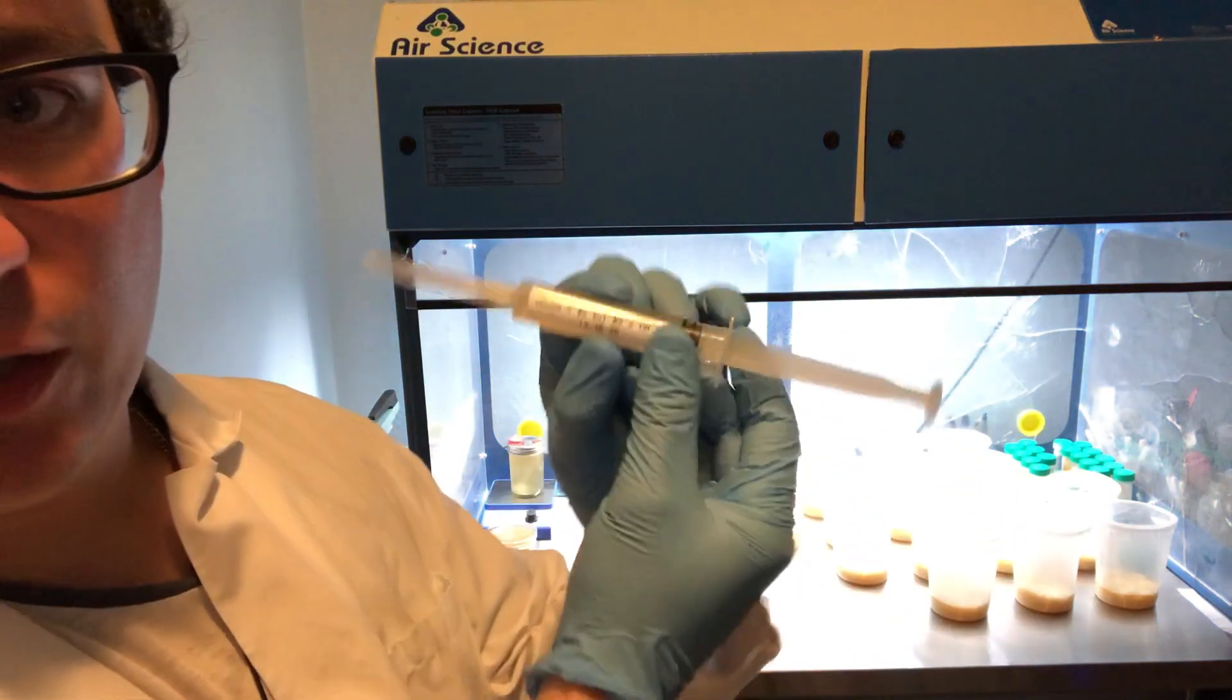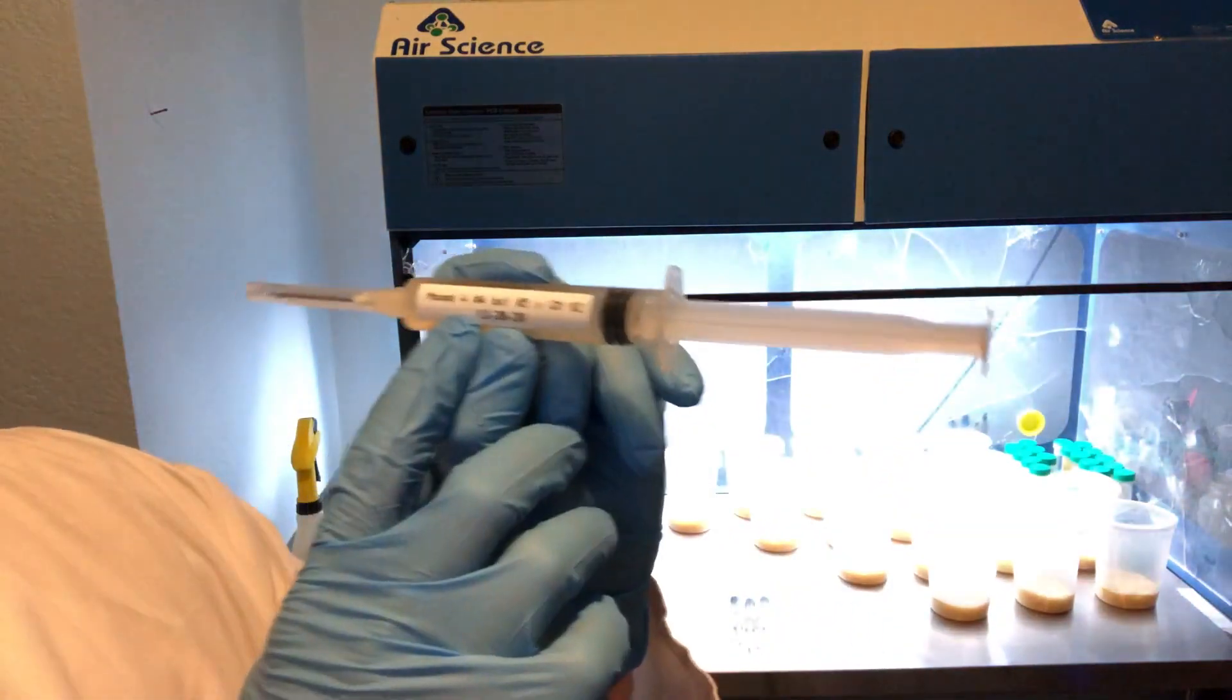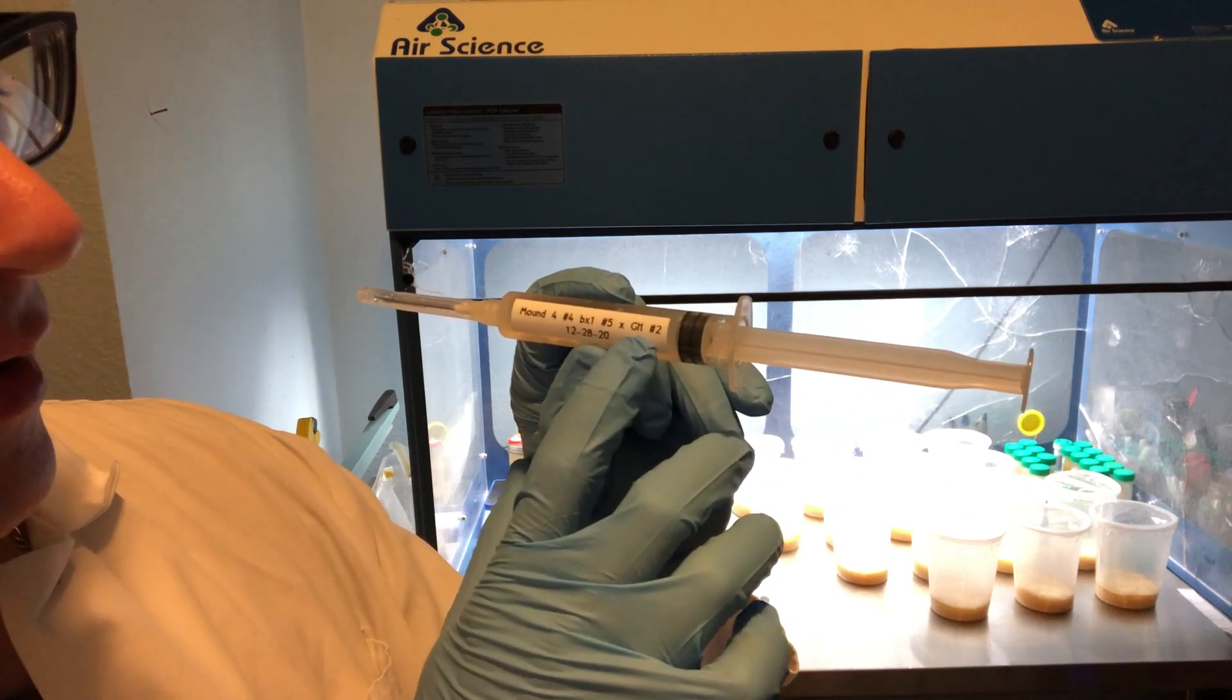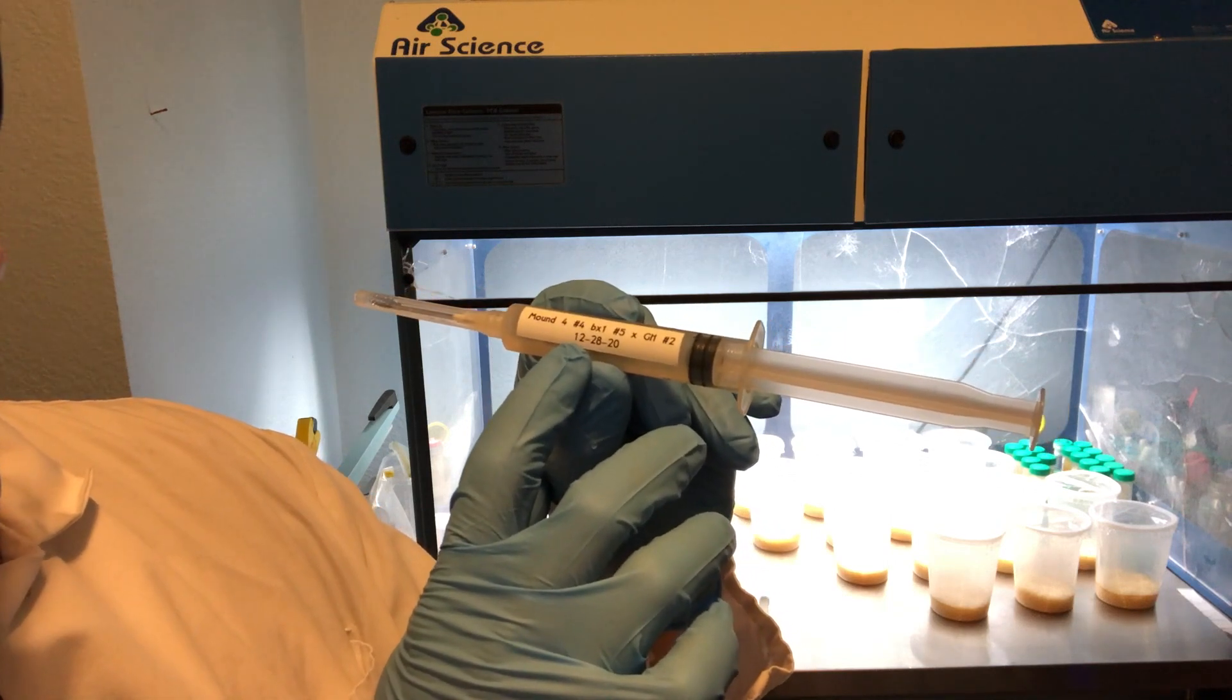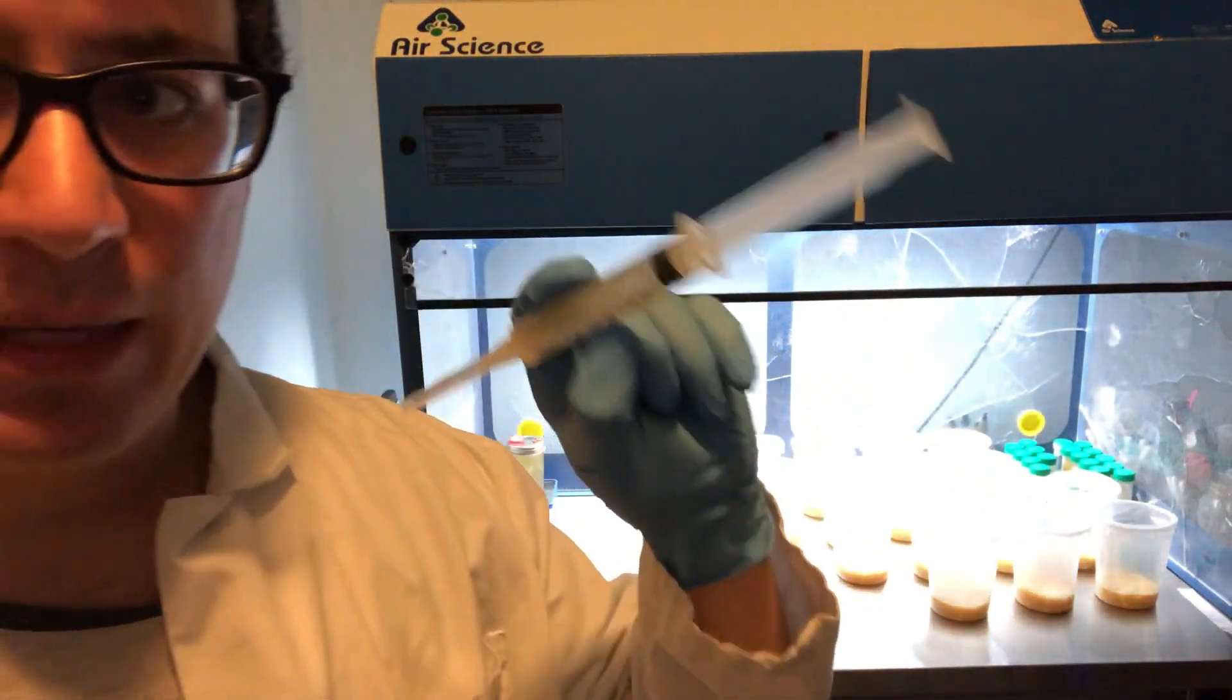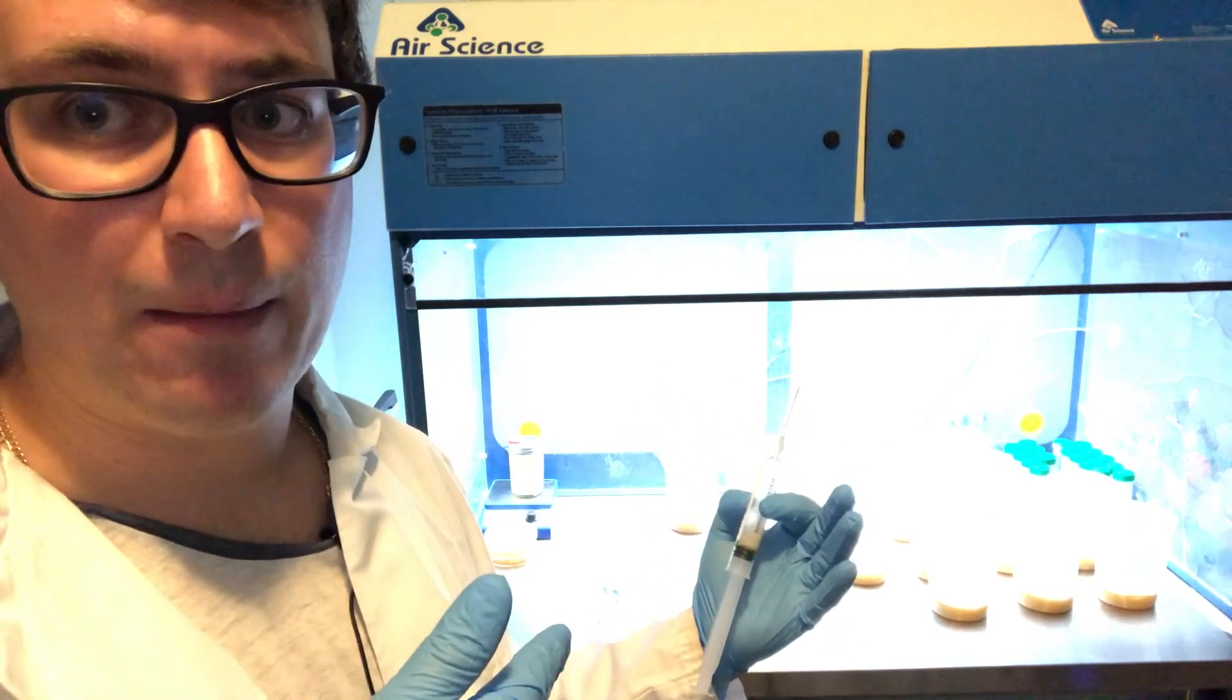There's a few really good breeders out there. I've got one strain from Terrestrial Fungi, so they have a really good reputation. This one is Mound 4 number 4 BX1 number 5 cross with GH number 2, and I got this on 12/28/20 from a friend of mine.